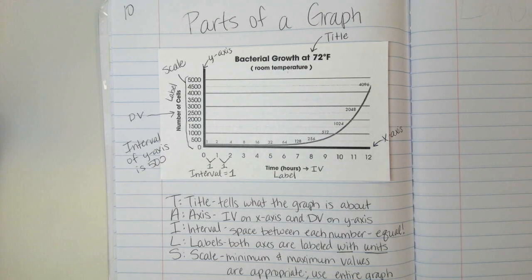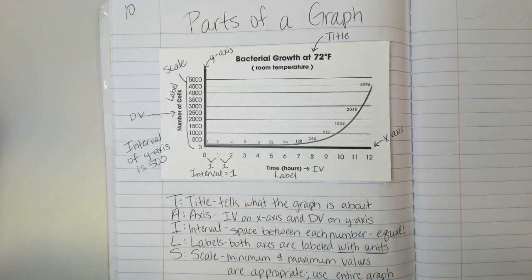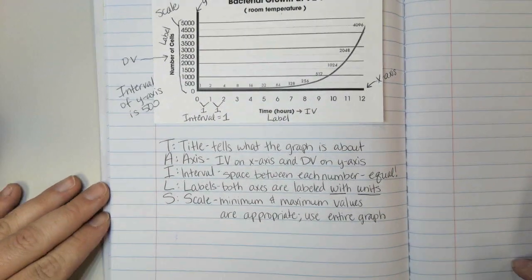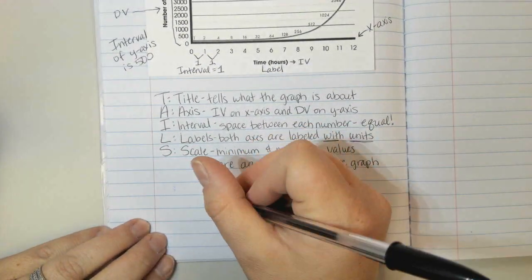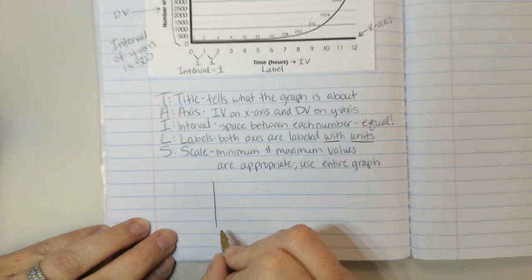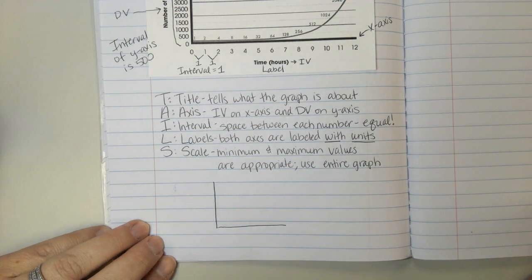When it comes to TAILS, one of the most difficult things for students typically is to figure out the A, the axis. Which variable goes on which axis? So we have another trick or a helpful tool to help us remember that. So that's what I'm going to write here at the bottom of page 10. I'm going to set up a graph. We usually have a graph that looks like this. Alright, we have both of our axes.